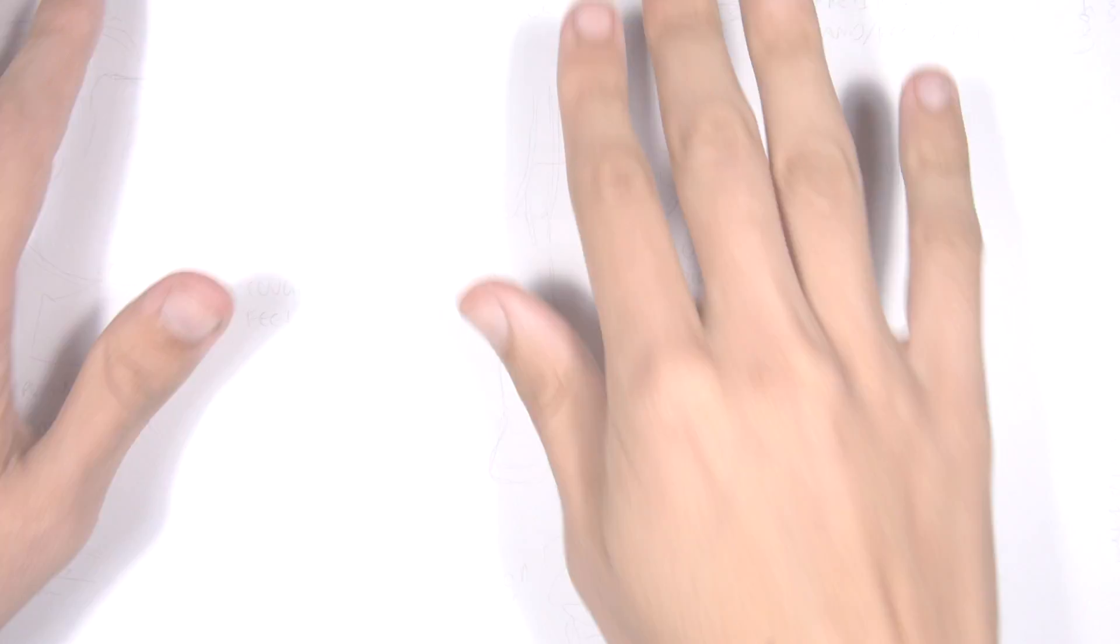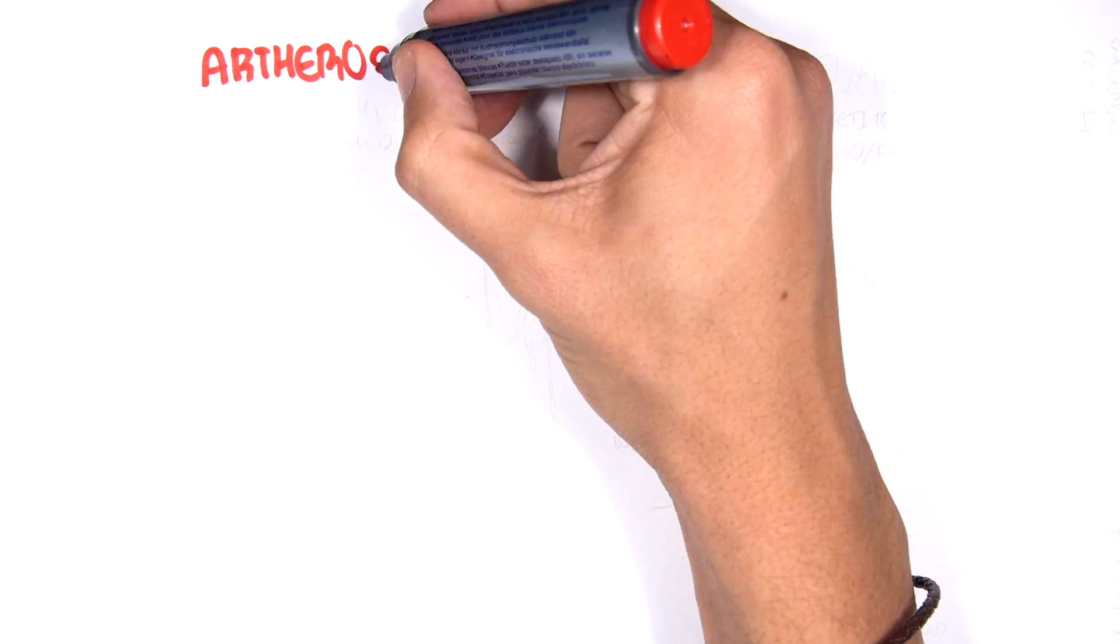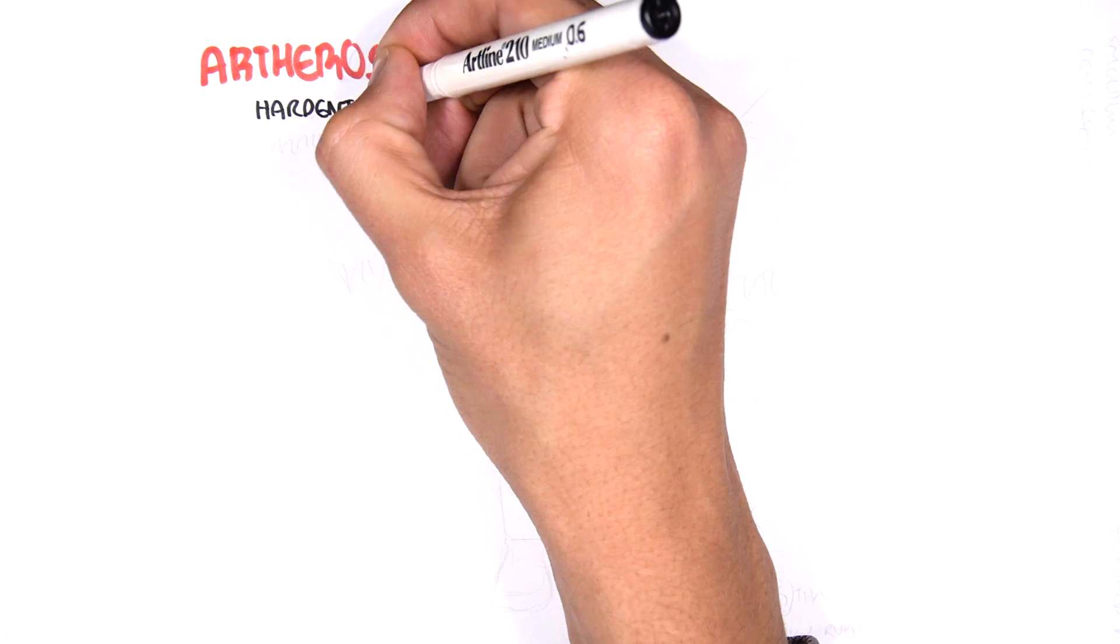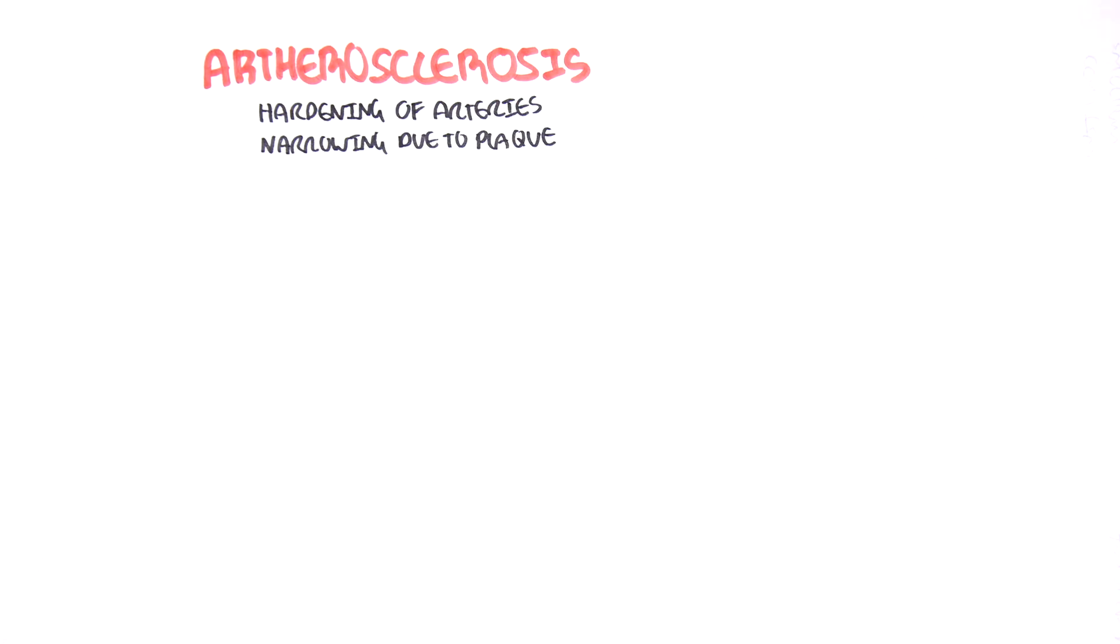In this video we're going to talk about atherosclerosis, which is hardening of the arteries, actually the narrowing of the arteries due to plaque formation. A plaque in this case is basically a waxy substance made of predominantly lipids.